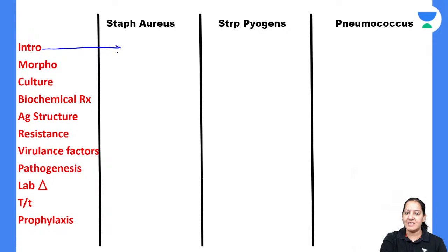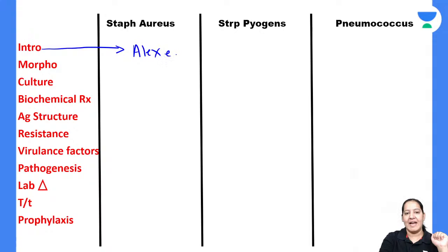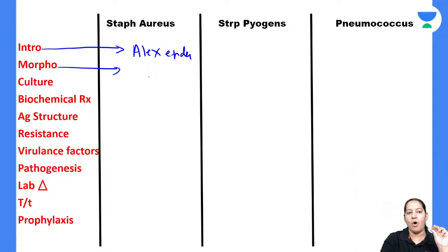In the last lecture I told you the name of the scientist who gave the nomenclature of Staphylococcus. The name of the scientist is Alexander, who described Staphylococcus and gave its nomenclature.